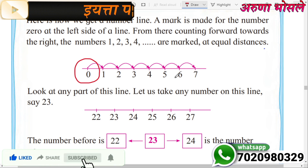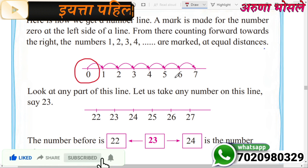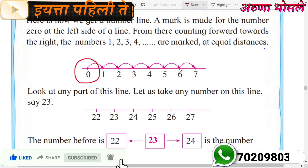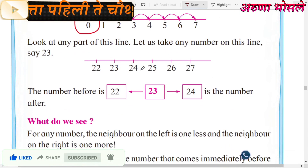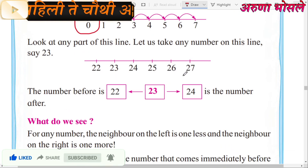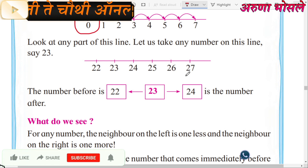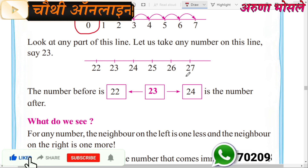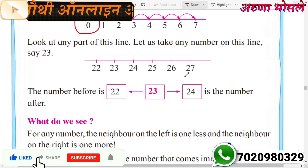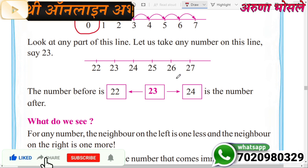Yaj paddhati che ek sankhyaresha khali ahe — below is another number line in the same way, showing numbers 22, 23, 24, 25, 26, 27. This is a number line with those numbers. Okay?